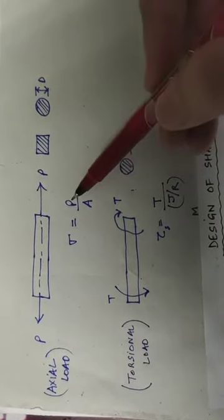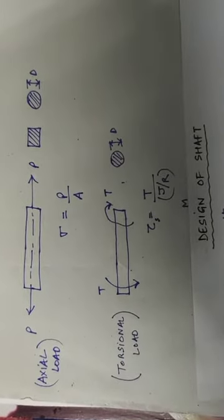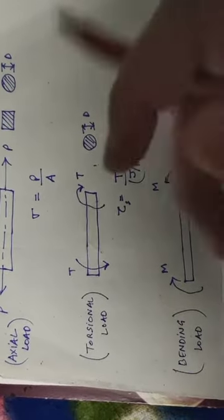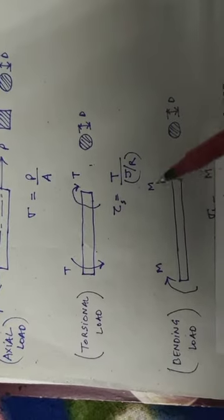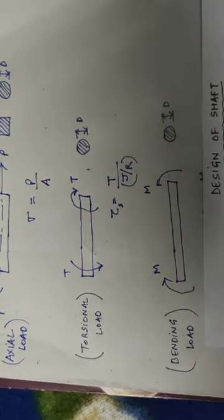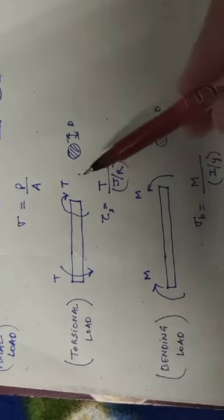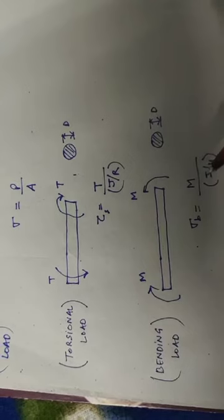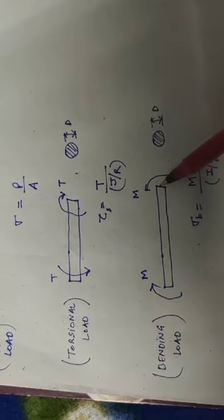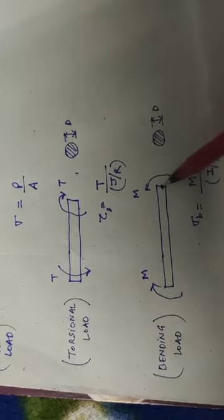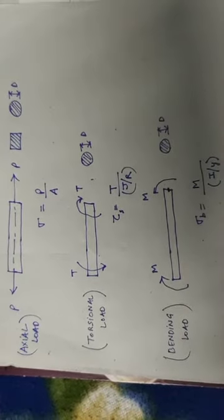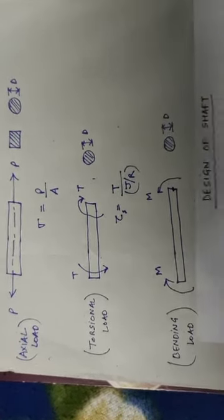By using the torsion equation, shear stress equals T upon J multiplied by R. In this equation, simple stress is replaced by shear stress, load T is replaced by torque, and area is replaced by polar moment of inertia divided by radius. In case of bending, the stress is replaced by bending stress, torque T is replaced by bending moment, and area is replaced by moment of inertia divided by Y, where Y is the distance of the outer fiber from the neutral axis.